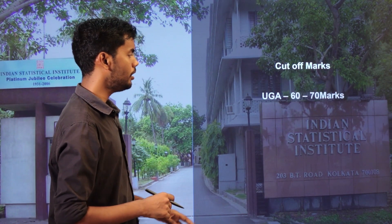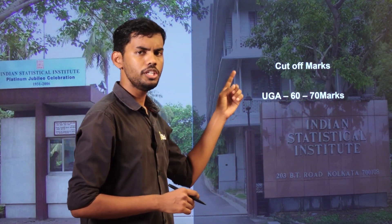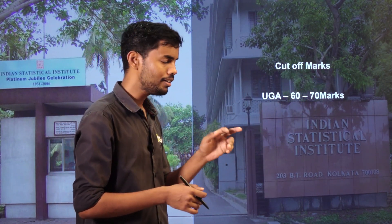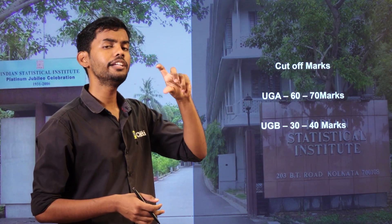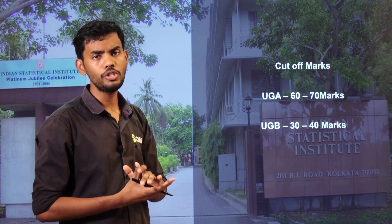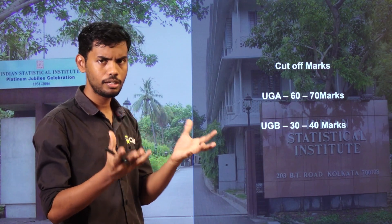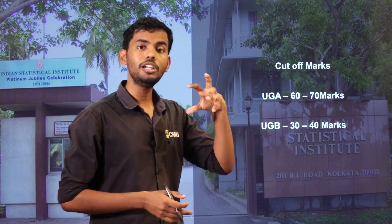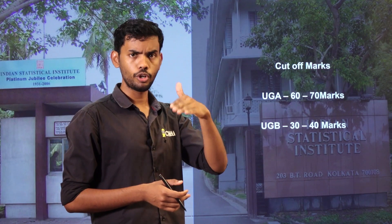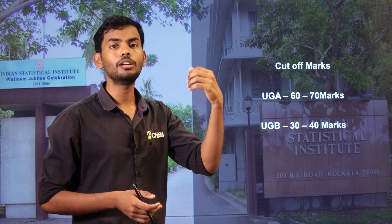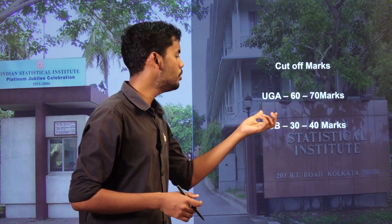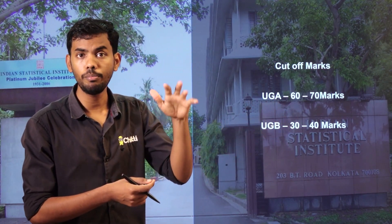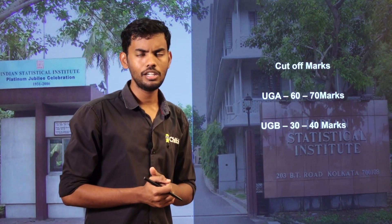The cut-off marks for the first exam UGA are 60 to 70 marks, and for UGB it is 30 to 40 marks. To secure admission, you should aim to score high marks in UGA — for example, out of 120 marks, try to score 100 or 110. Then maintain average performance in the interview and UGB.